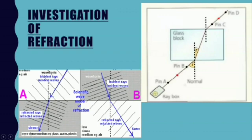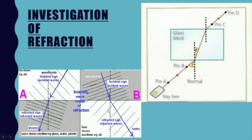For the investigation of refraction, consider wave fronts: incident waves and refracted waves are shown for two cases — one where light travels from air into a denser medium like glass, water, or plastic, and one where it travels from a denser medium into a rarer one. The wave fronts show how bending occurs: light slows down and bends towards the normal in a denser medium, and speeds up and bends away from the normal in a rarer medium.